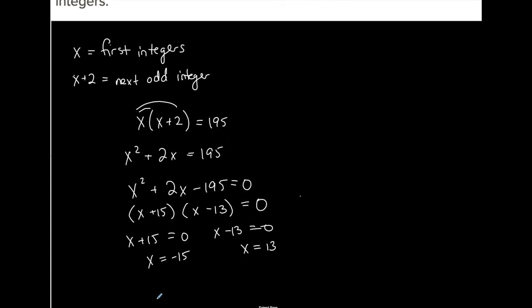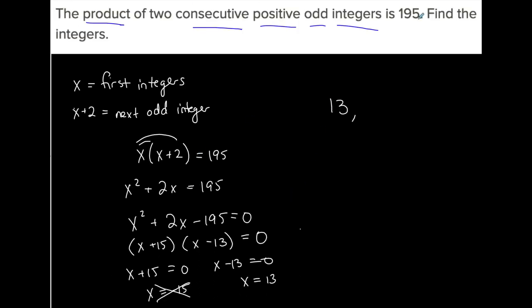If you notice, negative 15 is negative, so that one is out—that is not a positive odd integer. But 13 works. 13 is my first positive odd integer, that's my X. To get to the next one, I'm just going to add two and I get 15. My two consecutive positive odd integers that multiply to give me 195 are 13 and 15.